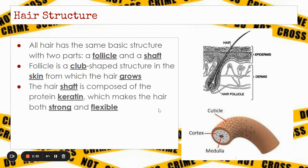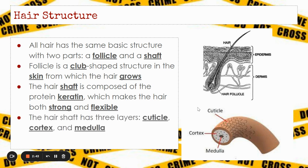The hair shaft is the longer portion of the hair. It's composed of keratin, which is a protein, and that keratin makes the hair strong and also flexible. The hair shaft itself has three different layers: a cuticle on the outside, a cortex in the middle, and a medulla, which is the very center.